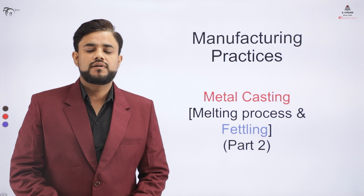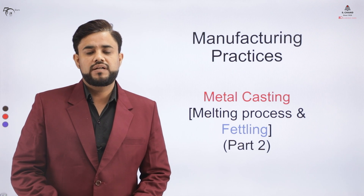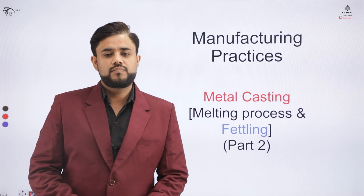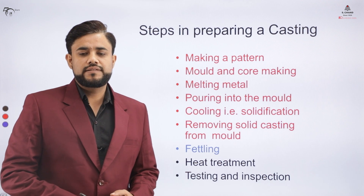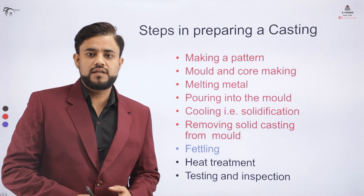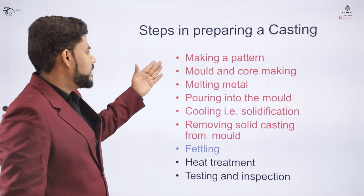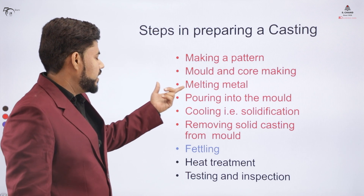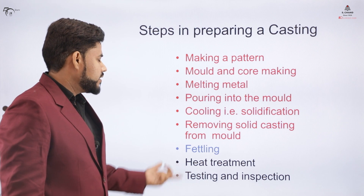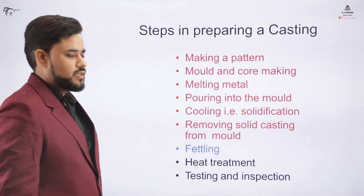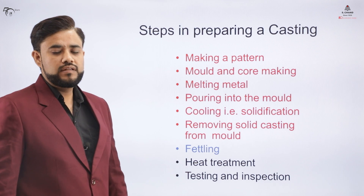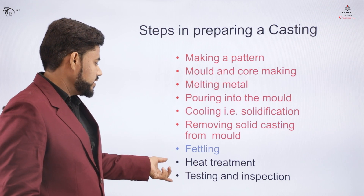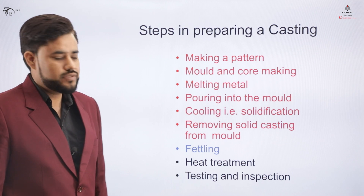This is the second part of the video on basic metal casting processes. The steps in the basic casting process are: making a pattern, molding or mold making, melting the metal, pouring into the mold, waiting for solidification, and removing the casting — all covered in previous videos. In this part, we will cover the fettling process, the heat treatment, and the testing and inspection process.